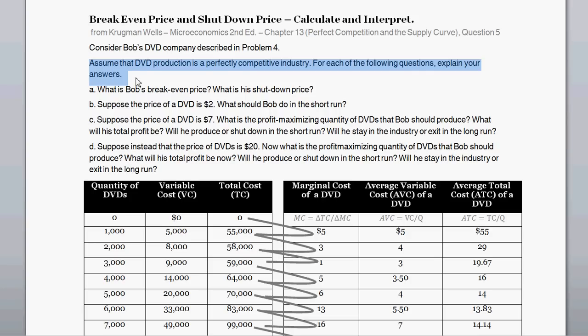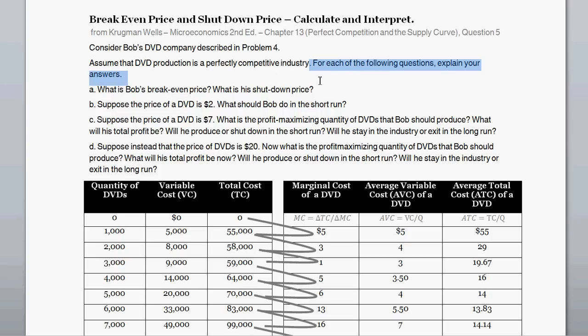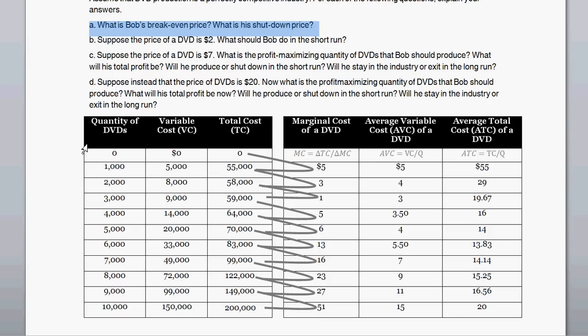In the long run, firms can influence price, but in the short run, with a perfectly competitive industry, no firm has real influence over price — all firms are price takers, accepting whatever market price exists. For each of the following questions, explain your answers. First off, what is Bob's break-even price? And what is Bob's shutdown price? For that, let's look at the cost table. In a previous video I went through these calculations — I'll post a link in the video description.